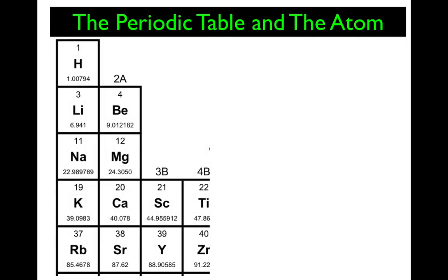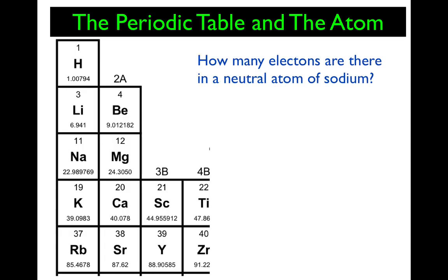How many electrons are there in a neutral atom of sodium? Sodium — symbol Na, from the Latin natrium — has an atomic number of 11. Since it's neutral, the number of electrons and the number of protons must be the same, so that would be 11. Atomic number 11 means 11 protons and therefore 11 electrons.